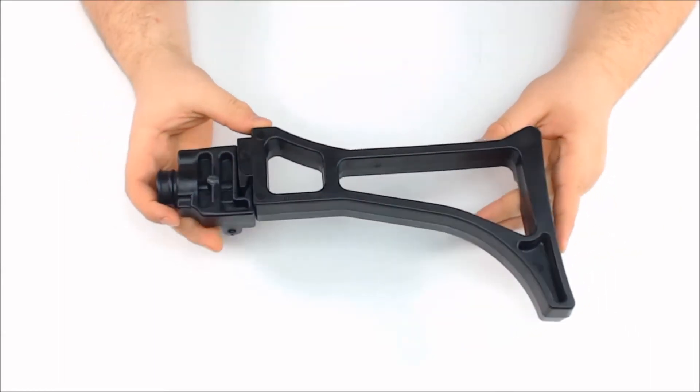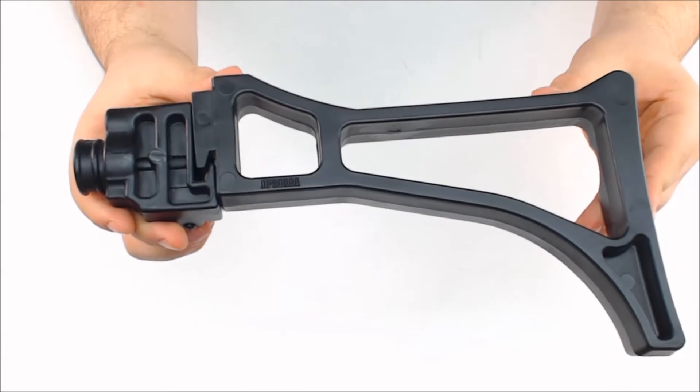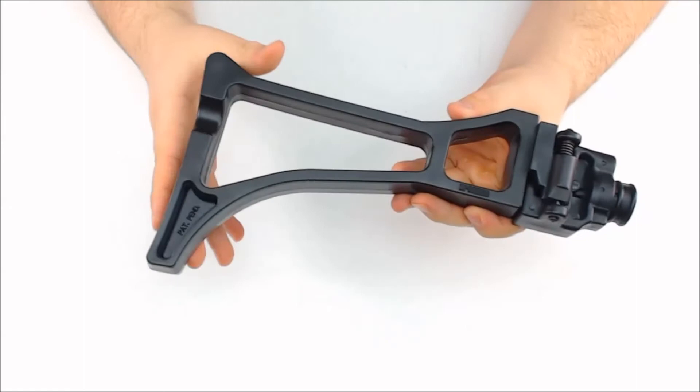This is the Lapco Raider G36 folding stock. The left side of the stock, the top of it, and the right hand side.